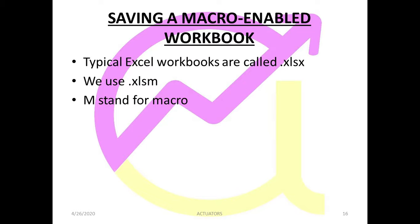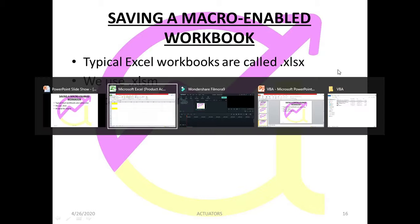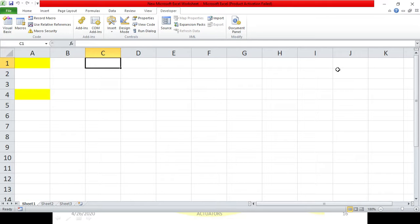Hello everyone. In this video I am going to teach how to save a macro enabled workbook. Typical Excel workbooks are called .xlsx. When you save any of your workbooks, you might have noticed that there is an extension to it, that is .xlsx — maybe you have named it as 'my workbook.xlsx'. That is the extension for a normal workbook.